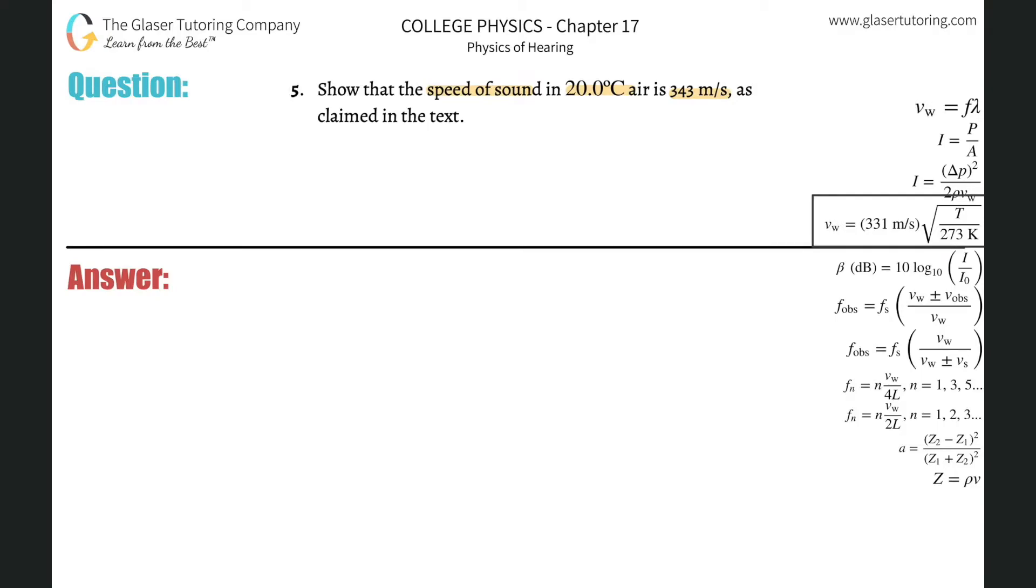All right, let me write it out. The velocity of the sound wave is going to be equal to 331 meters per second, multiplied by the square root of the temperature, the measured temperature, divided by 273. That's just a constant.